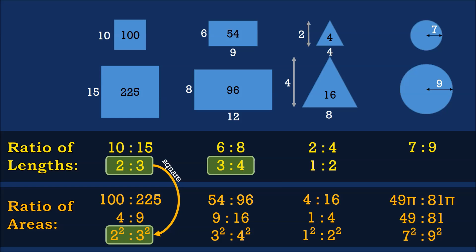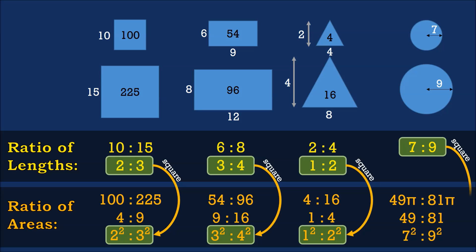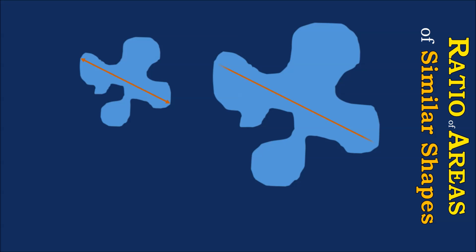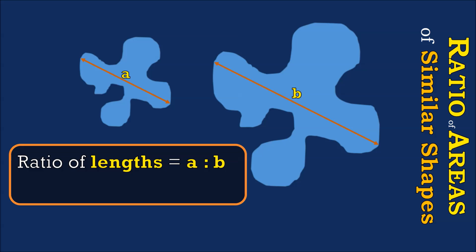We take the ratio of the lengths and square it. To summarise this correlation: suppose we are given two similar figures with corresponding lengths A and B, then the ratio of the lengths is A is to B, and the ratio of the areas is A squared is to B squared.